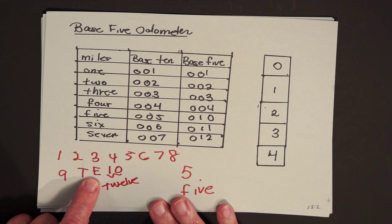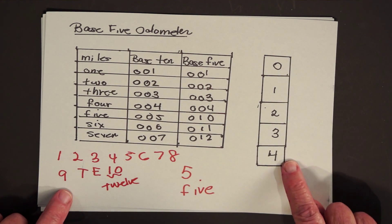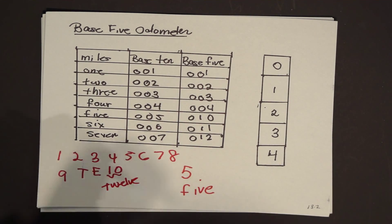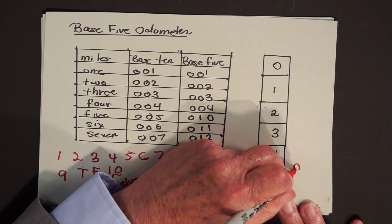We don't miss seeing the T and E any more than the people in this system miss seeing the numerals five, six, seven, eight, and nine.